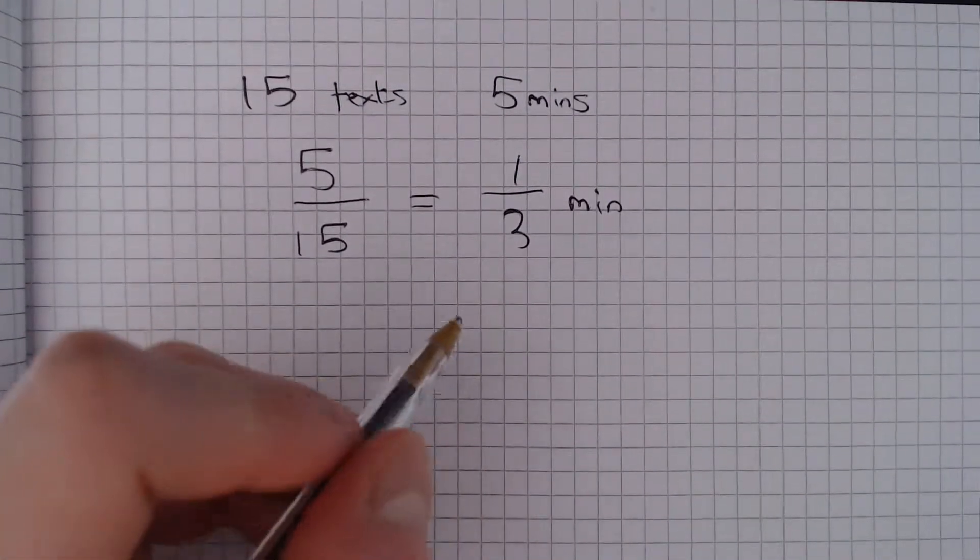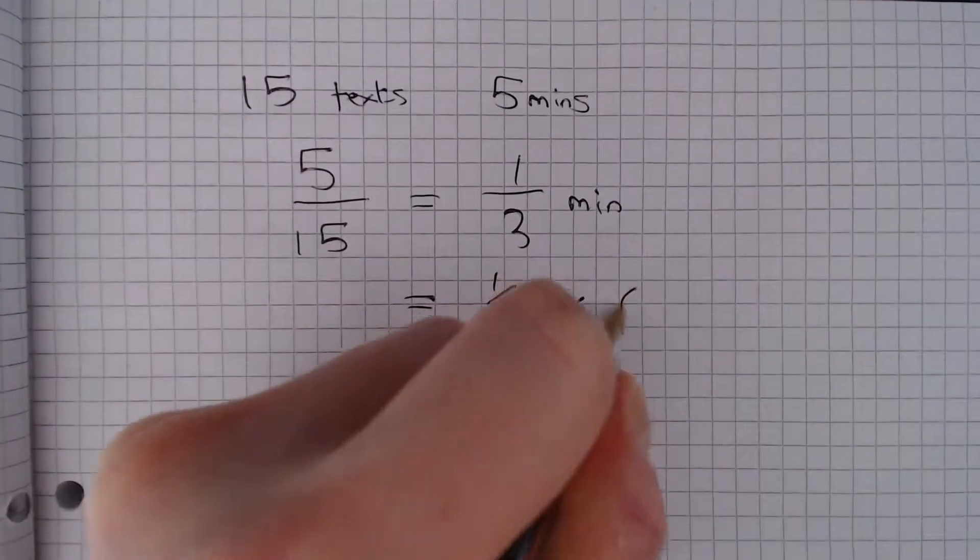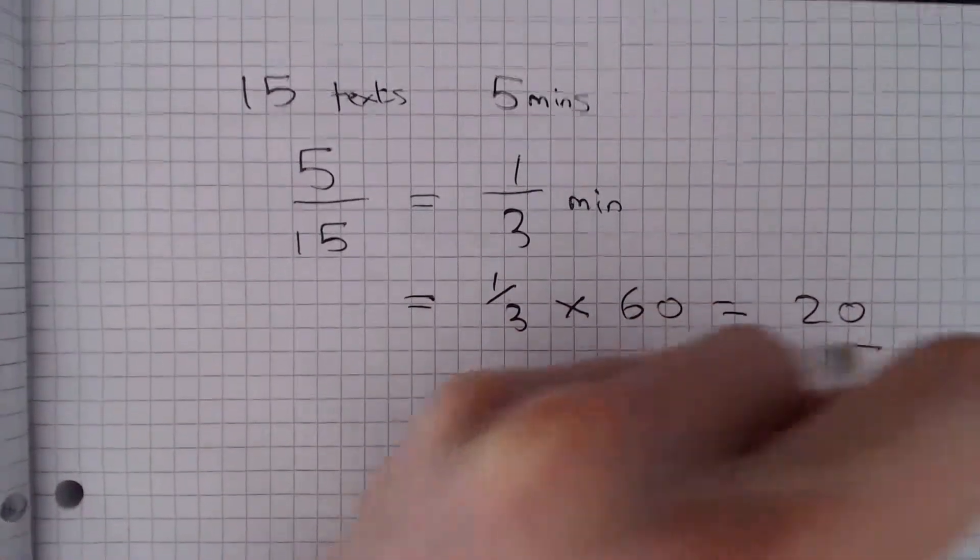Now a third of a minute in seconds is of course a third times 60, which is 20 seconds.